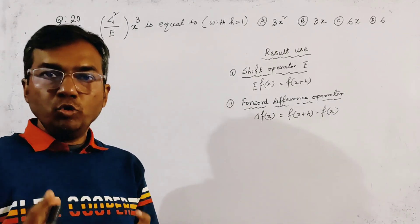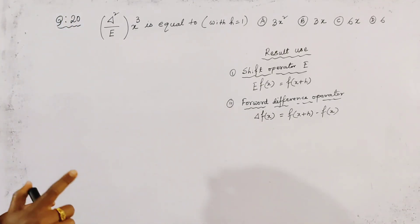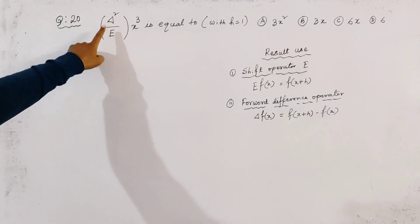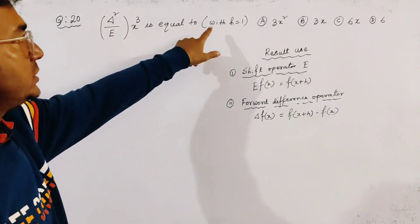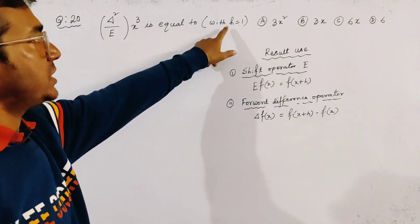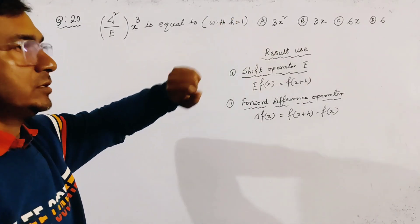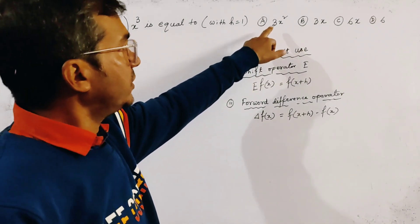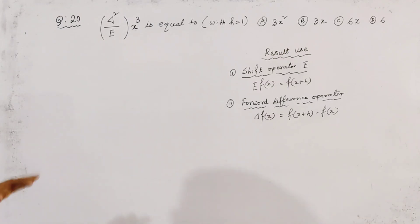MCQ from numerical analysis. Find the value of Δ² E⁻¹ x³, with h equal to 1. Four options are given and we have to find the correct option.